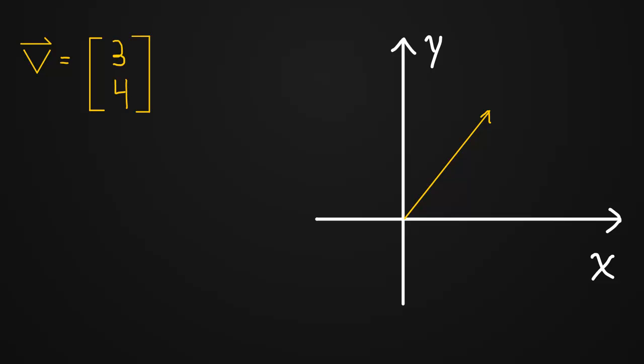And I want to talk about what happens if we take an exact copy of that vector and we move it somewhere else in the plane. So let's say we move it to right there.